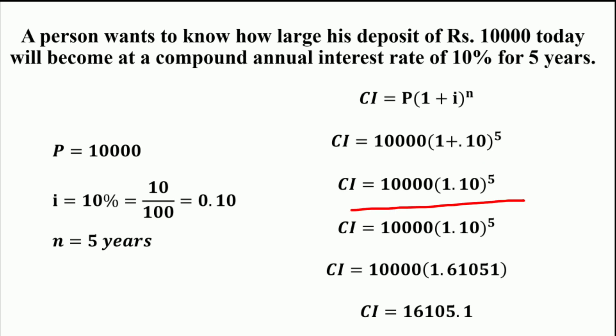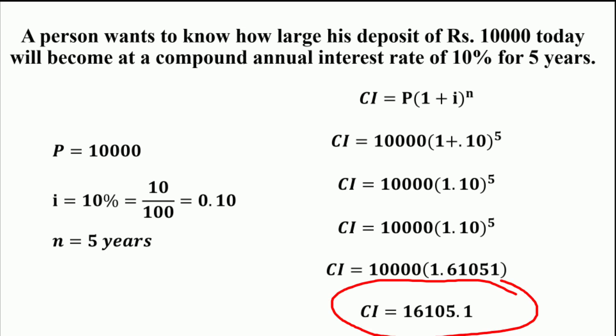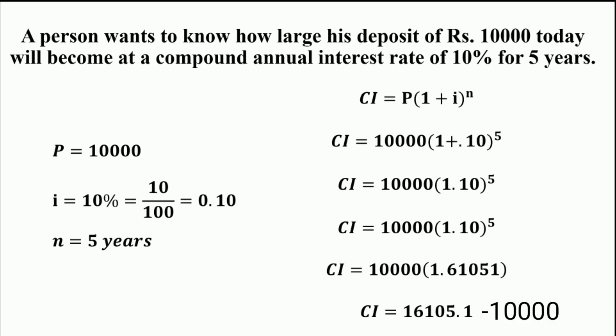This equals 10,000 × (1.1)^5 = 10,000 × 1.61051 = ₹16,105.1. The extra amount earned as compound interest is ₹6,105.1, found by subtracting the principal from the compound amount. This is the accumulated compound annual interest.